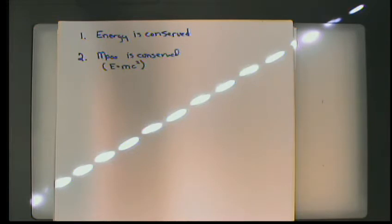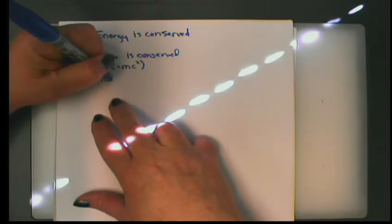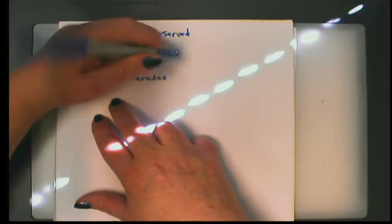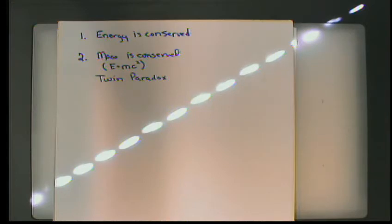There's this thing called the twin paradox, and there are some truths to this. If Euland and his brother Quentin — we actually have a twin in here — if Euland stays at mission control on Earth and launches Quentin up into outer space where Quentin travels very, very fast, when Quentin comes back, he will actually be older than Euland.